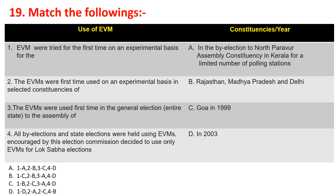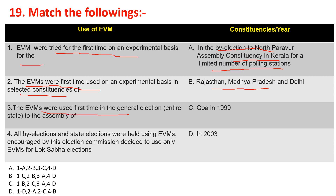Now match the following — use of EVM with constituencies or year. EVMs were tried for the first time on an experimental basis in the by-election to North Paravor Assembly constituency in Kerala for a limited number of polling stations in 1982. Then EVMs were first used on an experimental basis in selected constituencies of Rajasthan, Madhya Pradesh, and Delhi. The EVM was used for the first time in a general election for the entire state assembly of Goa in 1999.